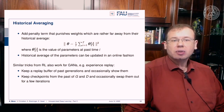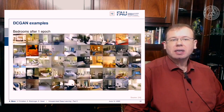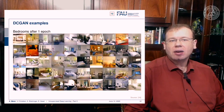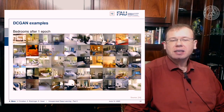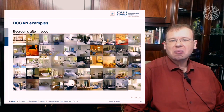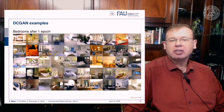If you apply these techniques with DC GAN, you can generate results like bedroom images after just one epoch, achieving quite a few different bedrooms. It's very interesting how much diversity in generation you can actually achieve.